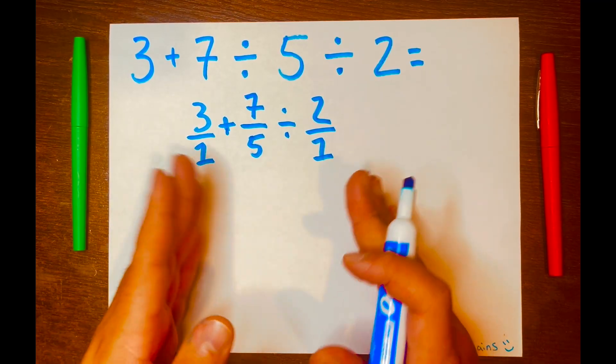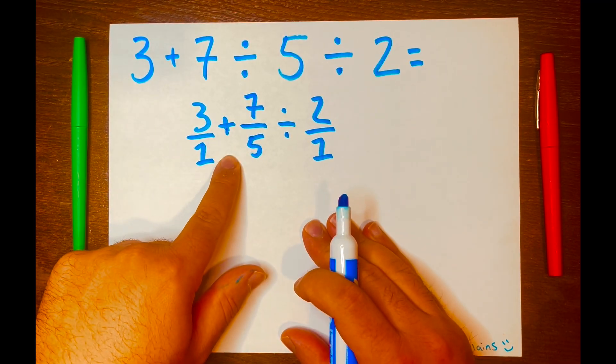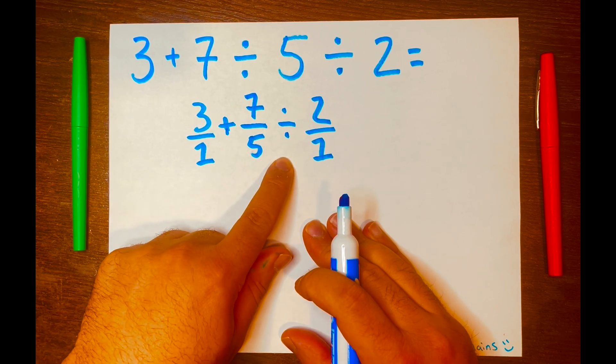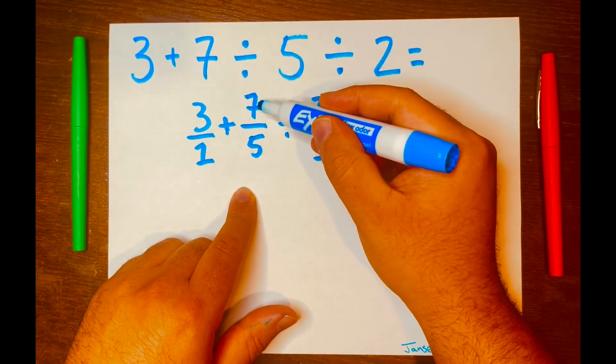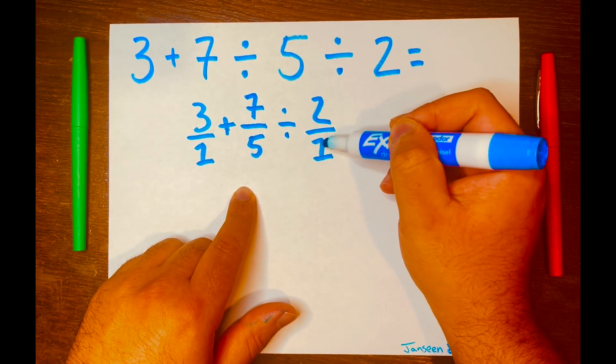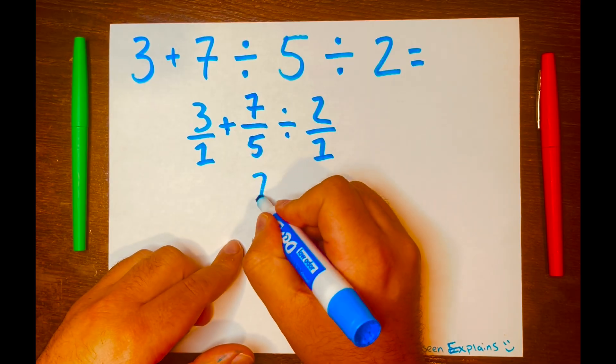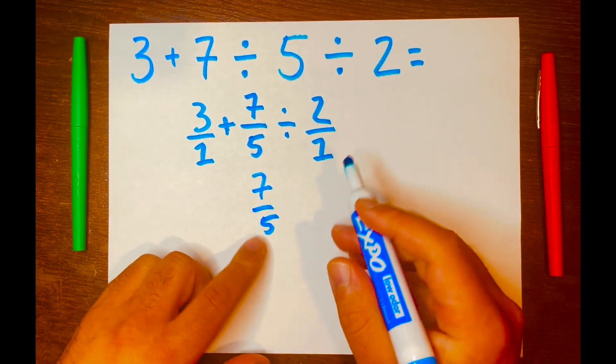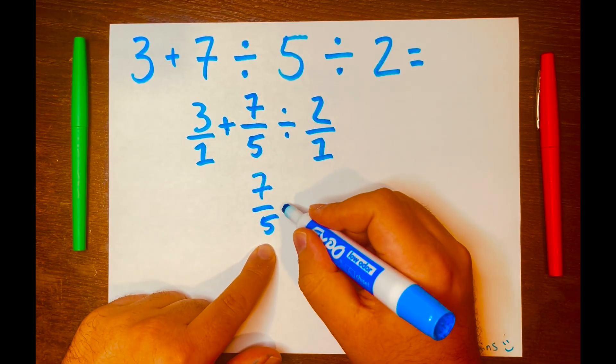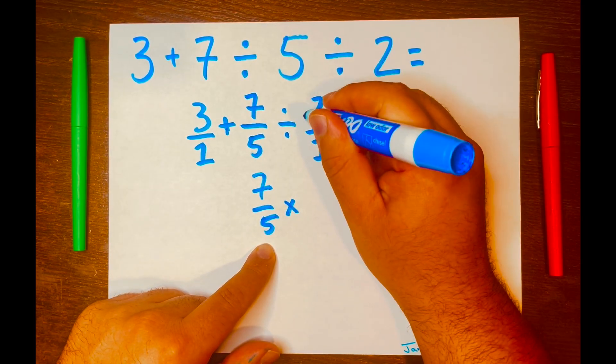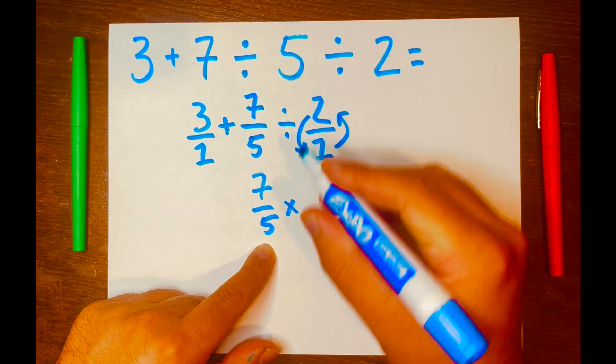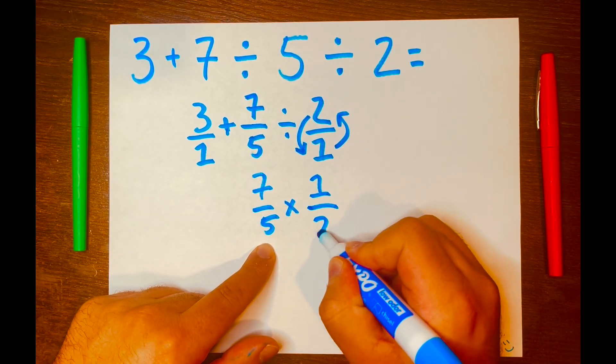Now reading from left to right, addition will not go first, division will. So we're going to use the keep change flip method to solve 7 over 5 divided by 2 over 1. So we're going to keep 7 over 5, then change the division symbol to multiplication, and then we're going to flip this fraction. So the 1 will go on top of the fraction and 2 will go at the bottom of the fraction. So it'll be written like this, 1 over 2.